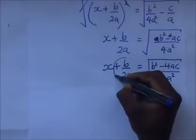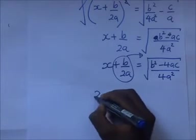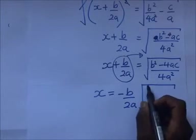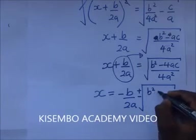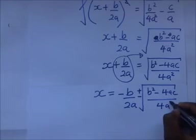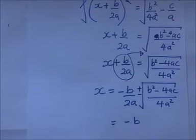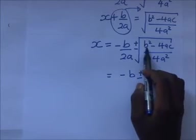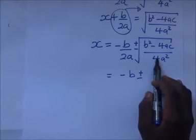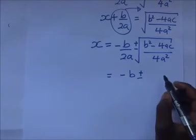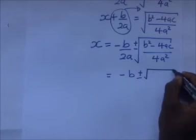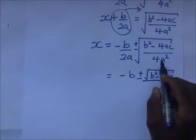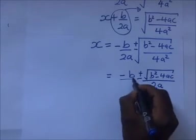This term moves to the other side and we remain with x equal to negative b/2a plus or minus the square root of (b squared minus 4ac) over 4a squared. Remember the square root is either positive or negative. The square root of a fraction is the square root of the numerator over the square root of the denominator. The square root of 4 is 2 and the square root of a squared is a, so the denominator simply becomes 2a. What we remain with is the square root of (b squared minus 4ac) divided by 2a.